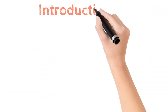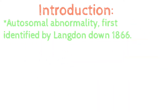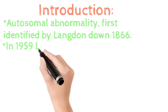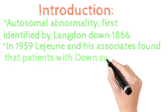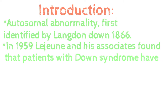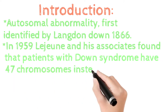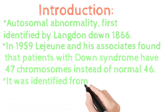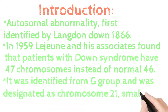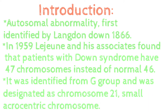Introduction: It is an autosomal abnormality. Autosomes are chromosomes other than sex chromosomes, i.e. X and Y. It was first identified by Langdon Down in 1866, hence the name Down syndrome. Later in 1959, Luzin and his associates found that patients with Down syndrome have 47 chromosomes instead of the normal 46.